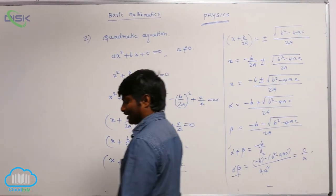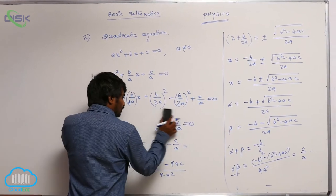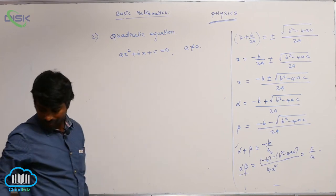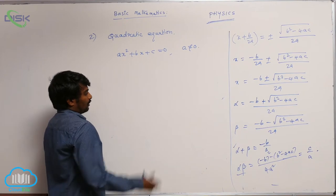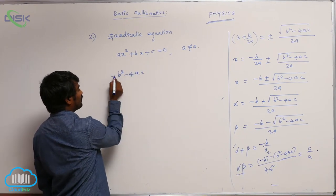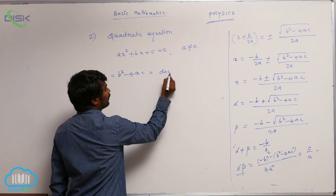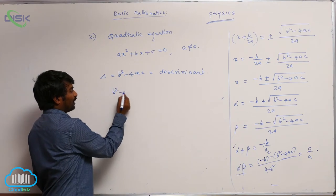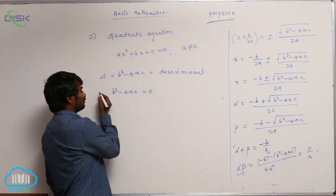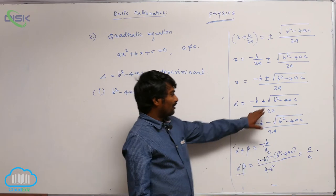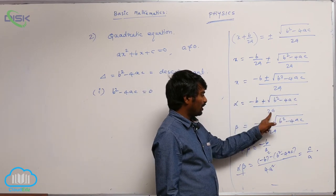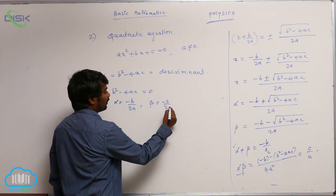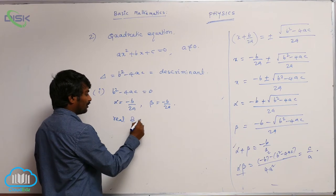Let us draw some more conclusions. We call B squared minus 4AC the discriminant, denoted delta. First condition: if B squared minus 4AC equals 0, then the under-root term becomes zero, giving alpha equals minus B by 2A and beta equals minus B by 2A. So you will be getting real and equal roots.